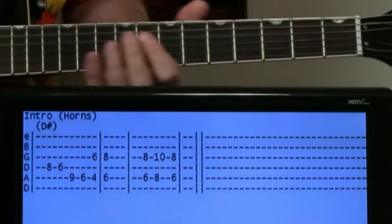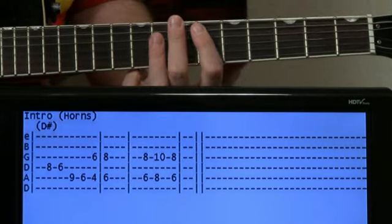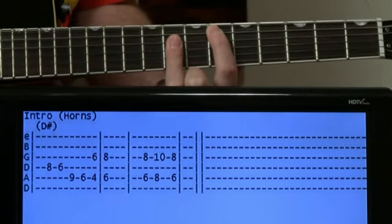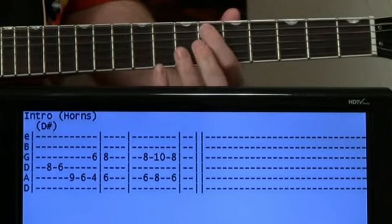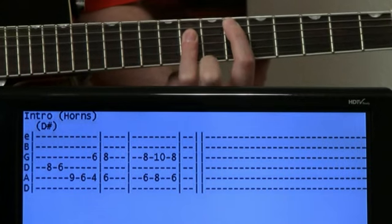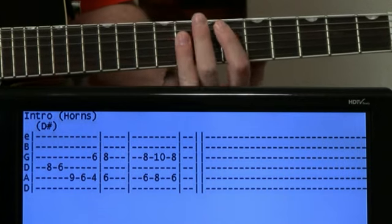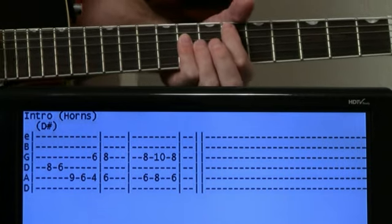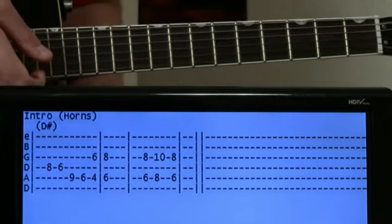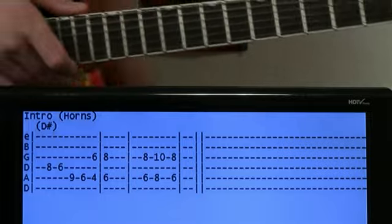While all this is going on, if you just want to be strumming chords, it's basically just a D sharp chord. So you can just play it right there. Six on the A and then eight, eight, eight on the D, G, B. You can just strum it lightly in the background or just hit it once and let it ring.